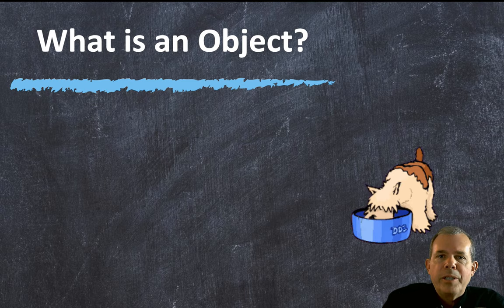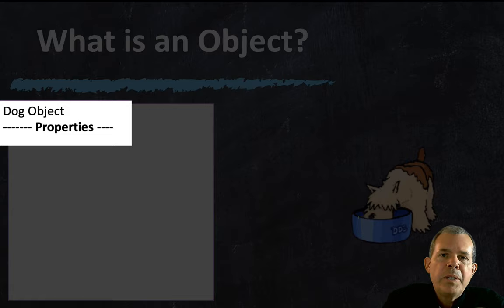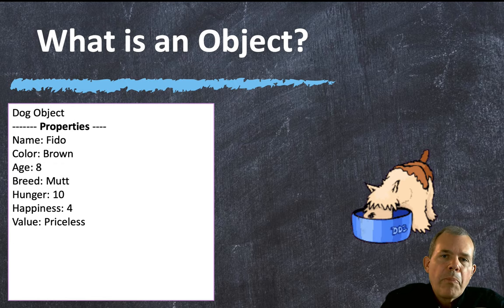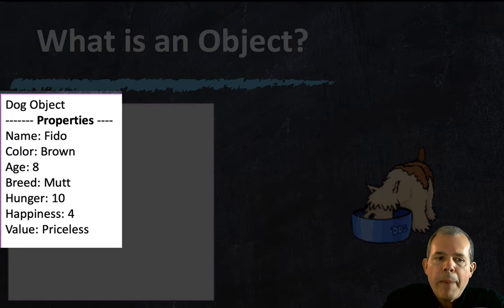So what is an object? Let's take an example from your family dog. Let's say he or she is an object in a video game. If you had to turn a real dog into a computer programming concept, the first thing you'd do is assign the characteristics of your dog as something called properties. The property called name might be Fido, or the property might be the color, the age, the breed, the hunger, the happiness level, and the value. All of these can be represented with numbers, strings, or certain objects themselves.